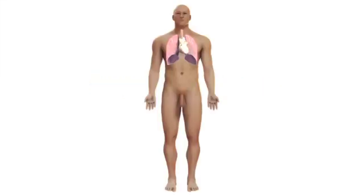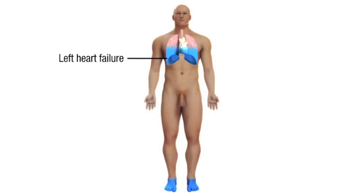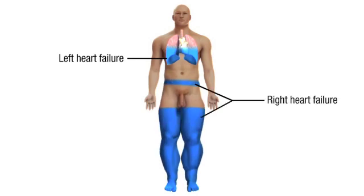Congestive heart failure occurs when the heart is unable to pump blood efficiently around the body. Blood returning to the heart is not circulated properly and becomes congested in the veins and lungs. Left ventricular heart failure results in vascular congestion in the lungs causing breathing difficulties, while right ventricular heart failure causes blood to accumulate in the legs, abdomen, and liver.